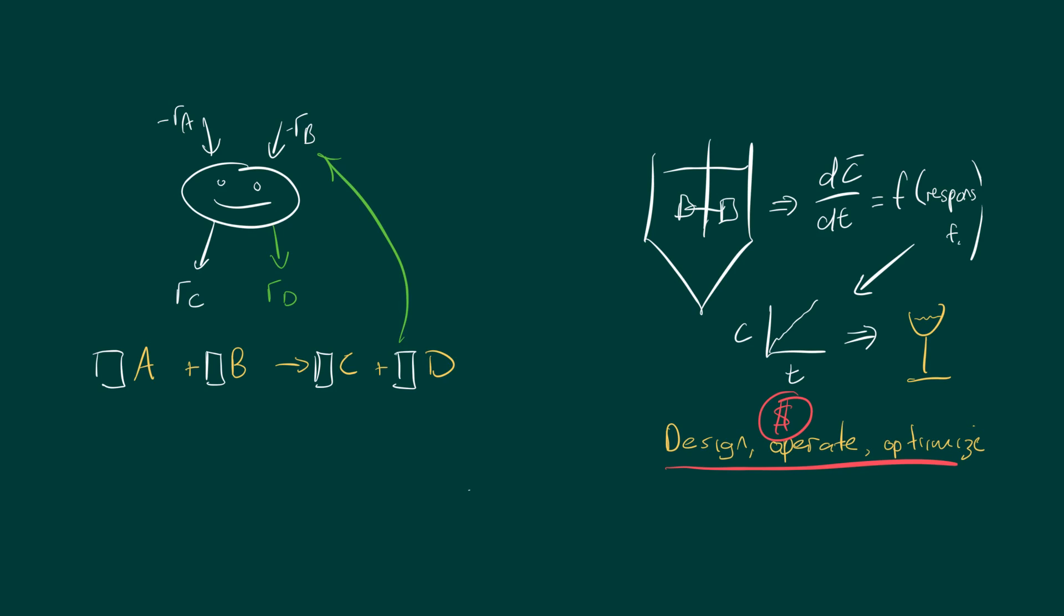This will give us that interesting cycle - the bug is changing the environment of the fermenter. Because of the response function of the bug, the fermenter conditions change.